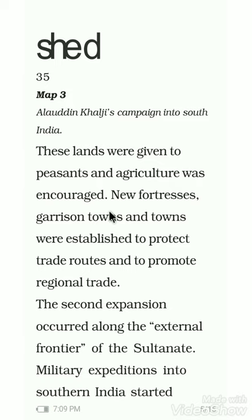After that we discussed about the internal and external frontier. In the interior part of the kingdom — the internal frontier — new fortresses, garrison towns and towns were established to protect trade routes and to promote regional trade. As we discussed, Feroz Shah Tughlaq made nearly 300 new cities to promote trade and regional routes.